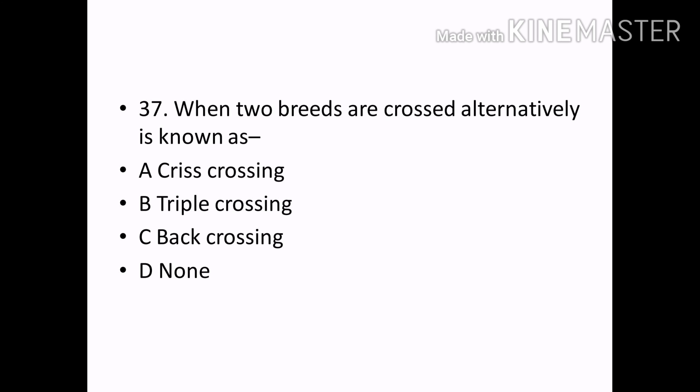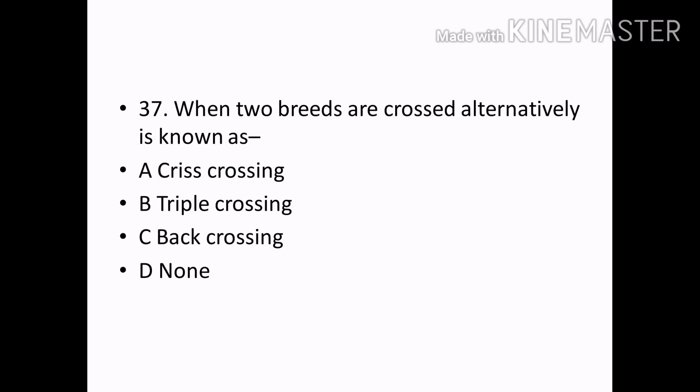When two breeds are crossed alternatively, it is known as: Options — Criss-Crossing, Triple-Crossing, Back-Crossing, None. Correct answer: Option A — Criss-Crossing.